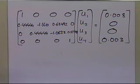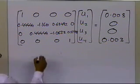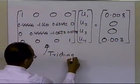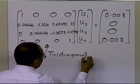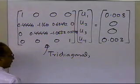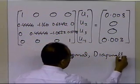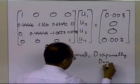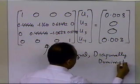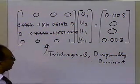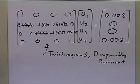So we have four equations and four unknowns. One important thing to notice is that this coefficient matrix is tridiagonal — that's something to look at as homework. Additionally, this matrix is diagonally dominant, which has implications for solving the system.